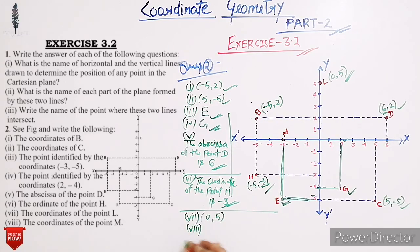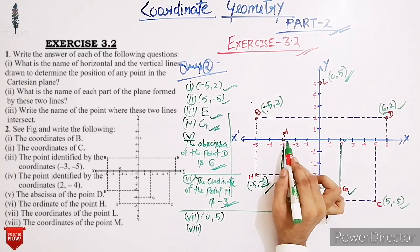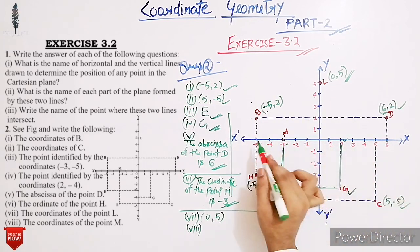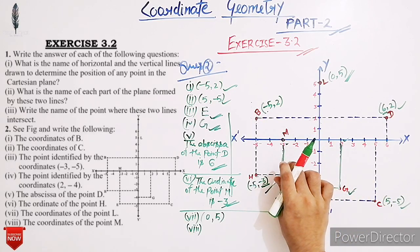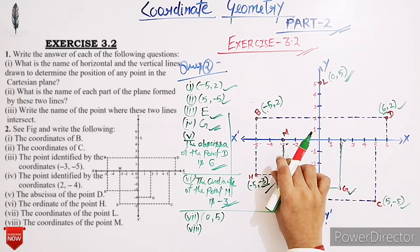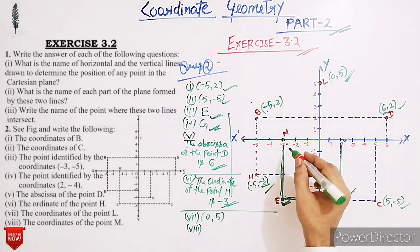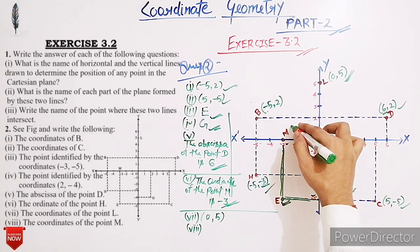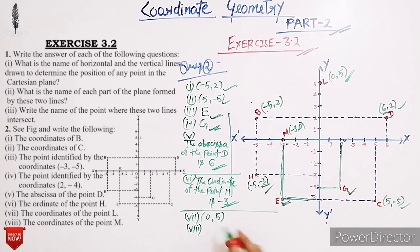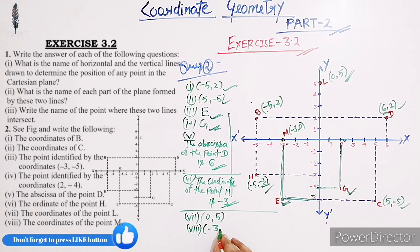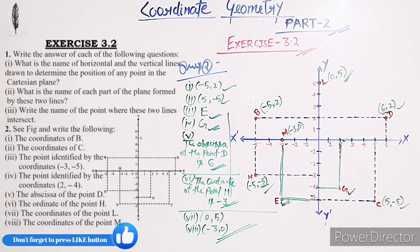Now next, the coordinates of point M. In the figure, point M lies on the x-axis, so the x-coordinate of point M is the distance from the y-axis, which is 3 units. M lies on the negative x-axis, so the x-coordinate is -3 and the y-coordinate is 0. So the coordinates of point M are (-3, 0).